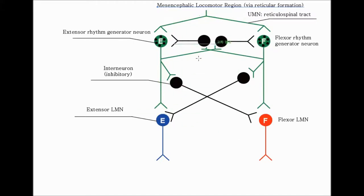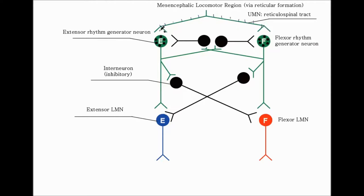So how do we run this? We need the inputs first, and then we can see how it creates rhythmic patterns of contraction of the muscles. Let's say we have action potentials delivered to those rhythm generators. We'll see excitatory neurotransmitters released, and they will fire.